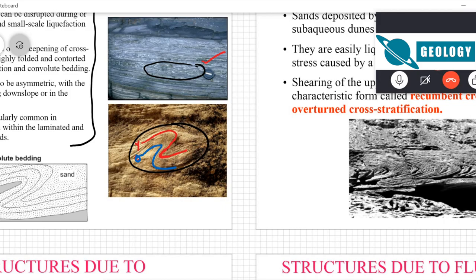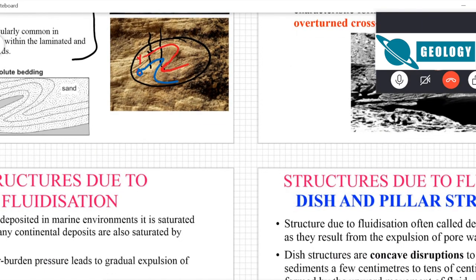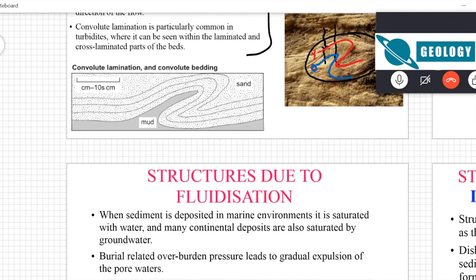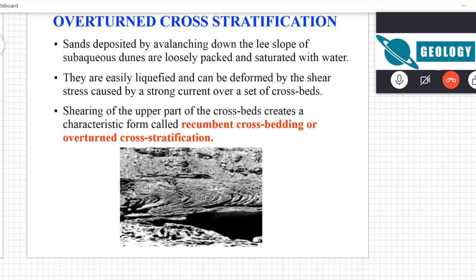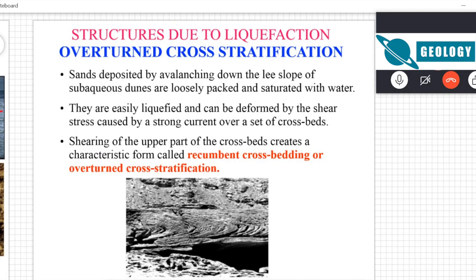Normally going from top to bottom you encounter younger then older strata, but in this region older is on top and younger is at the base. If you drill here, the shallow part will be old and the deep part will be young. These types of beds are known as overturned beds. Overturned cross stratification is also evidence of liquefaction, though it is not the only process that creates overturned cross strata.